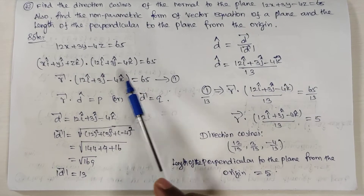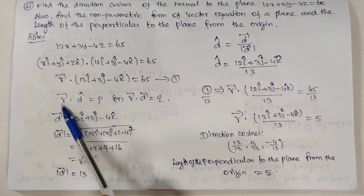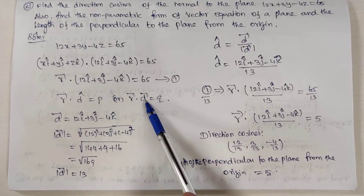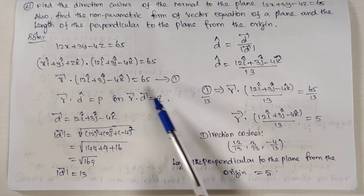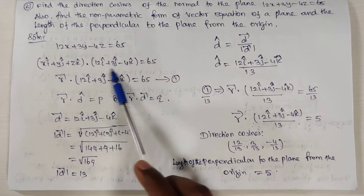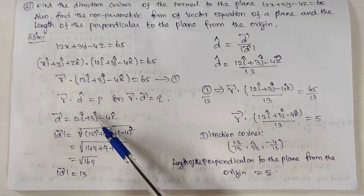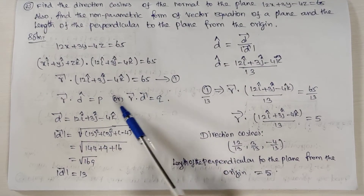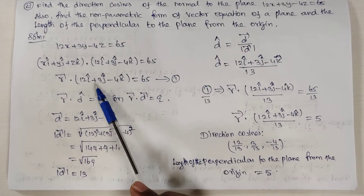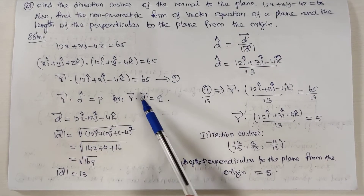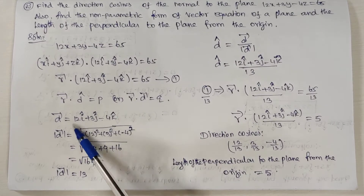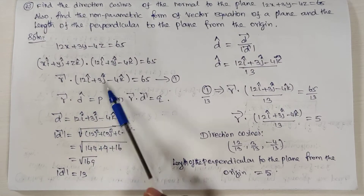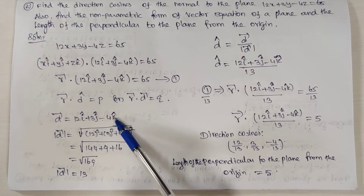We have to compare this. The standard form is r⃗ · d̂ = p, or r⃗ · d⃗ = q. Here it is given in the d⃗ vector format, not d̂. So comparing, r⃗ · d⃗ = q, and d⃗ = 12î plus 3ĵ minus 4k̂.